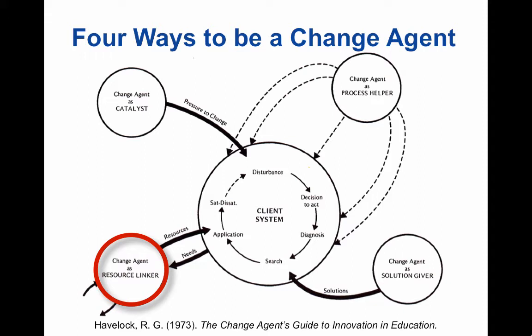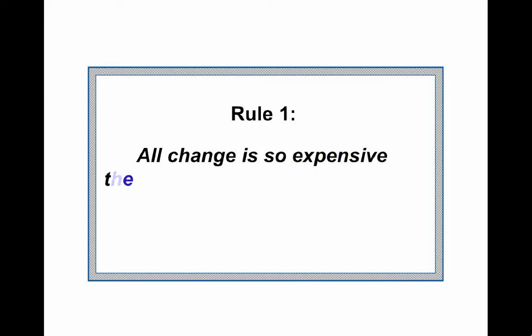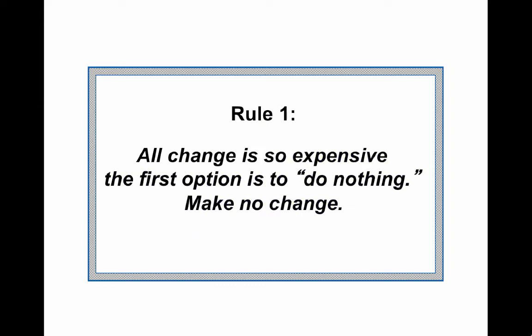My favorite is the change agent as a resource linker. When somebody calls me and needs help and I'm not able to provide that help, what I like to do is link them with other resources that will help them. Remember, change is expensive. So the first rule of change is that all change is so expensive that the first option is to do nothing — make no change. That's a hard rule to follow because people are really excited about innovation, but make sure it's worthwhile before you commit the resources.